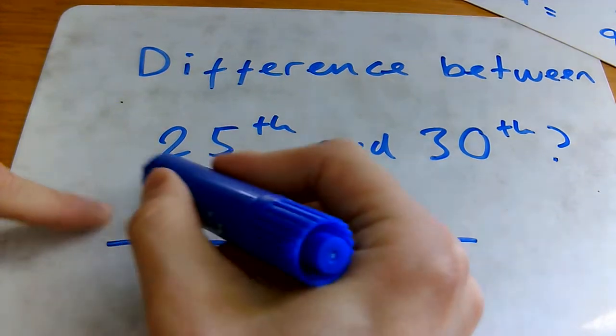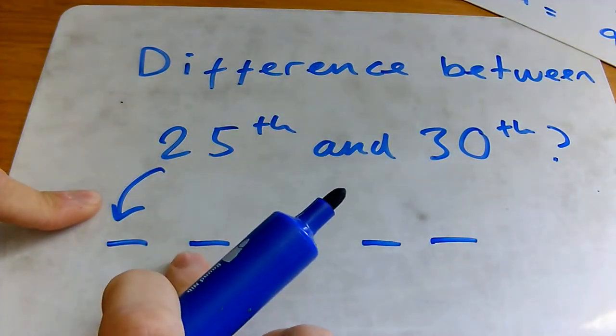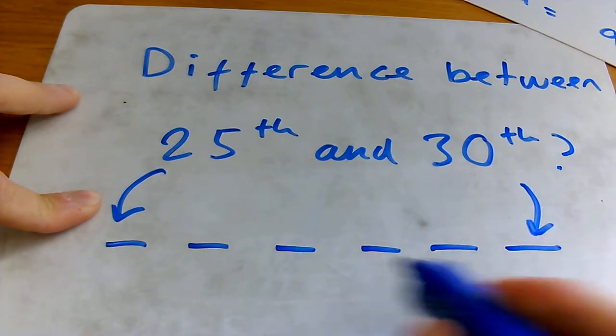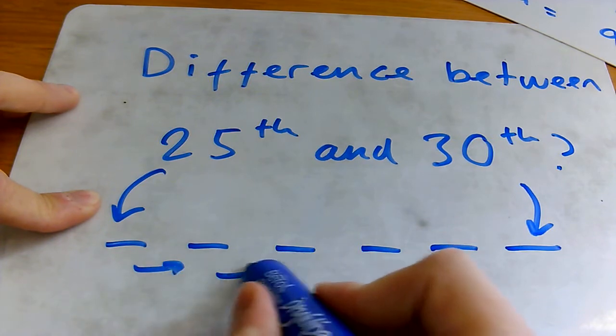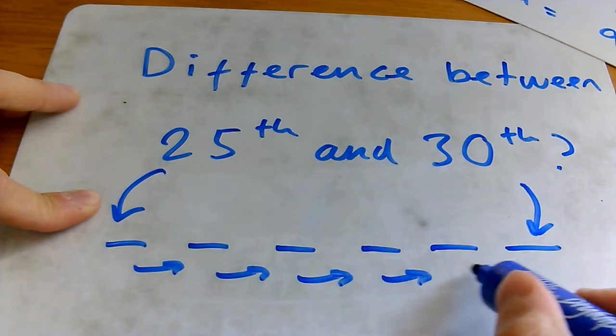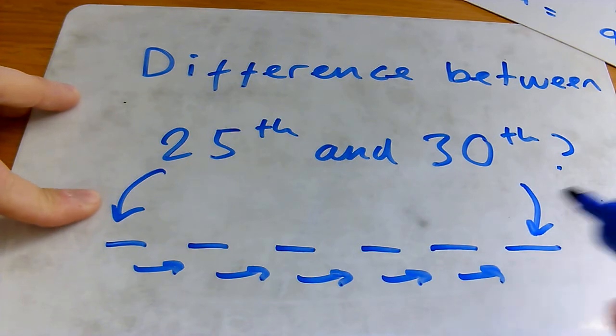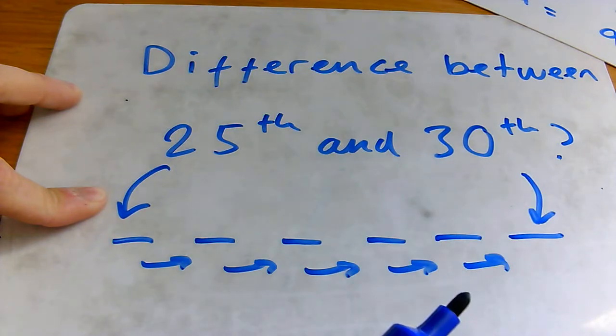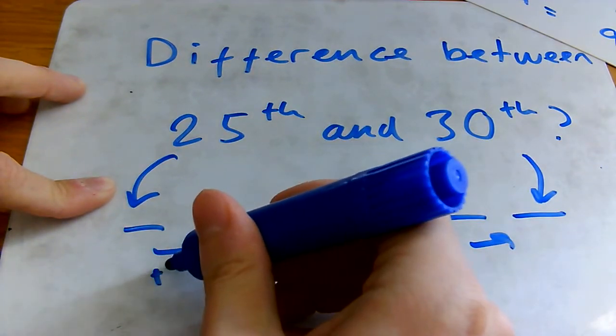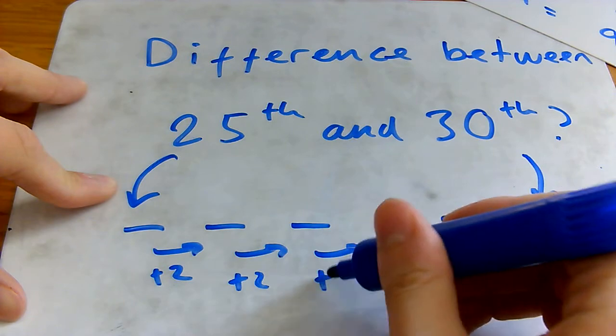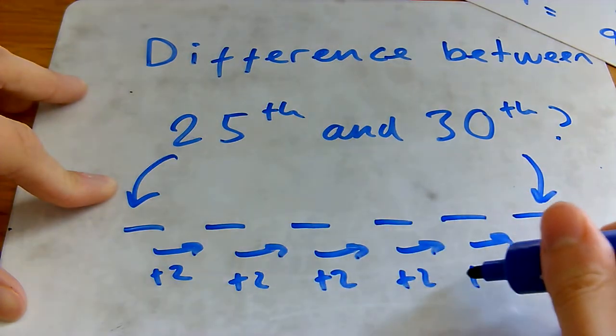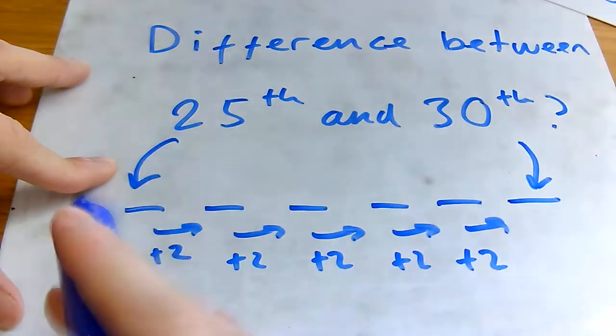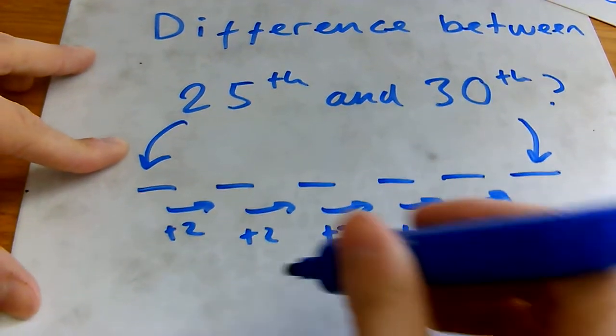This is the 25th term, and this would be the 26th, 27th, 28th, 29th, and here's the 30th term there. How many times have we had to apply the rule to get there? Well, you probably saw it straight away, there's five steps, there's five terms between these two. So that means we have to add 2 each time we take a step. That means we're adding 2 five times, that means the difference will be five lots of 2, which is 10.